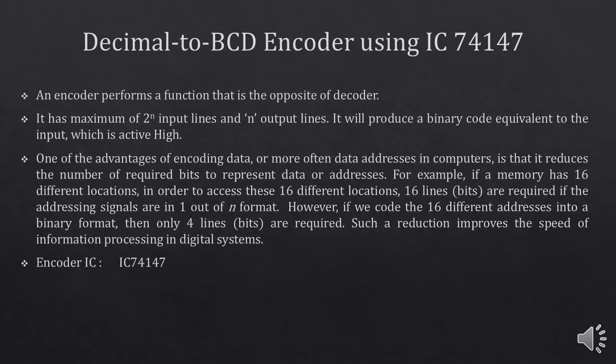In part 3 of this lab, you are going to use a BCD encoder. An encoder performs a function that is opposite to that of a decoder. It has a maximum of 2 raised to power n input lines and n output lines. It will produce a binary code equivalent to the input, which is mostly active high. One of the advantages of encoding data is that it reduces the number of lines required to represent the data.